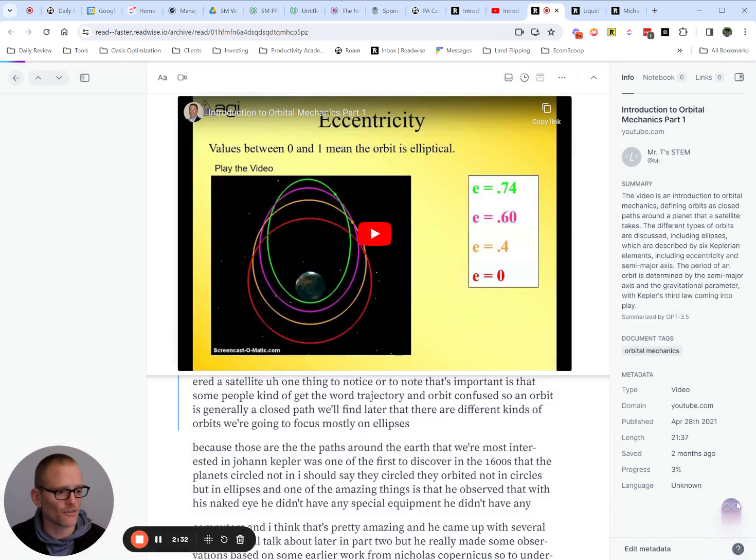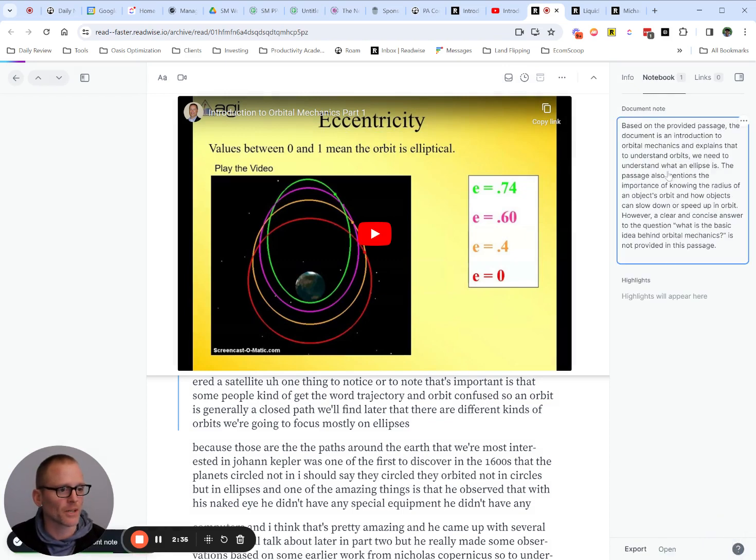You can see over here, see the little ghost reader icon. And there we go. Based on the passage, the document is an introduction to orbital mechanics and explains, mentions the importance of knowing the radius of an object's orbit. However, a clear and concise answer to the question, what is the basic idea, is not provided. I think that's actually really good.